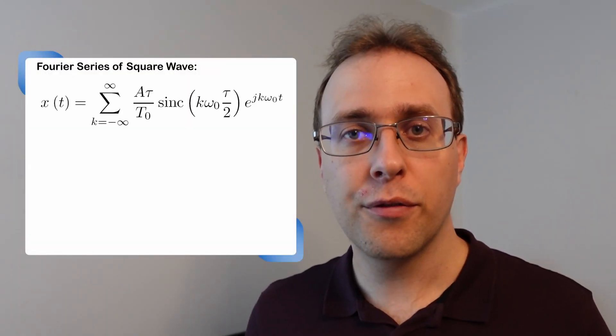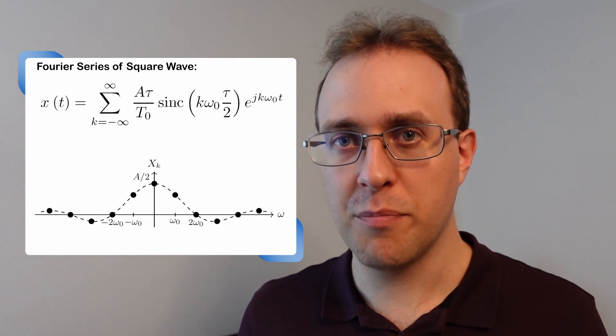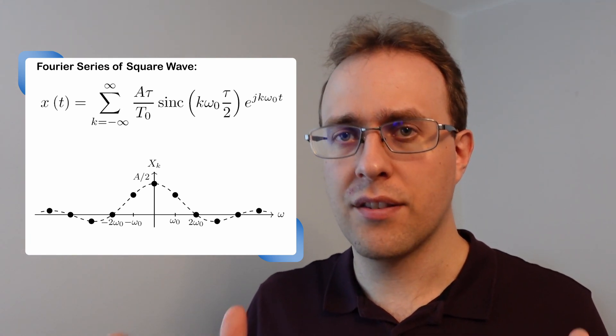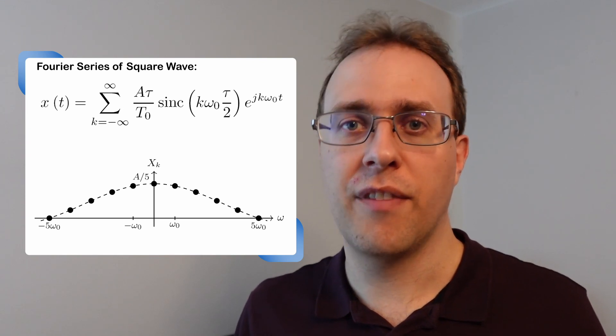We can then write the full Fourier series as an infinite sum. If we plot the Fourier coefficients, then we see how we get a discrete spectrum that are samples of the sinc function. If the interval for being high is low relative to the fundamental period, then we would find that the sinc function varies more slowly.